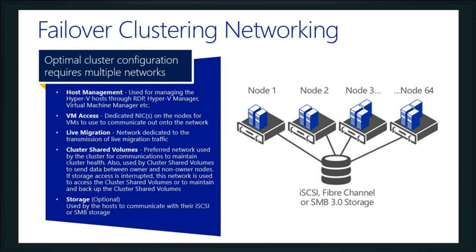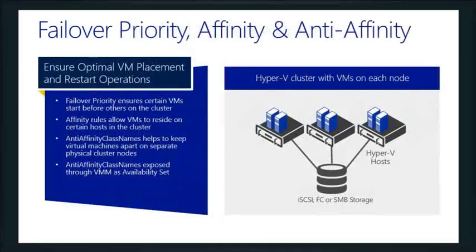When you set up a clustered network, the demo environment we use has several networks defined, and all we're basically doing is controlling what type of traffic goes over certain connections for the health of the cluster — so storage traffic doesn't have cluster communications happening across it, but heartbeat traffic and similar things do. Just like VMware, we support failover priority and preferential treatment of our nodes. We support affinity and anti-affinity rules.